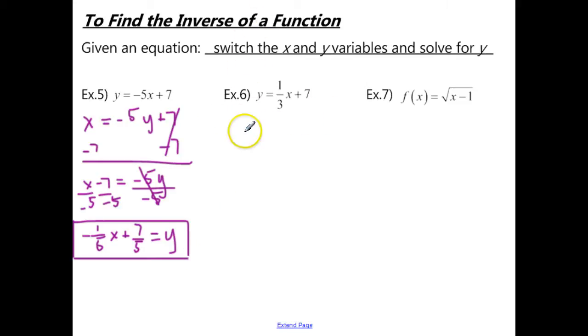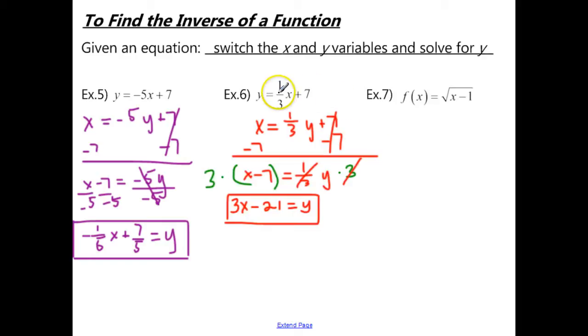So I want you to go ahead and try example 6 and then check back with me when you finish. So first you should switch your x and y variables. And then we need to solve for y. So subtract 7 from both sides. And you get x minus 7 equals 1 third y.